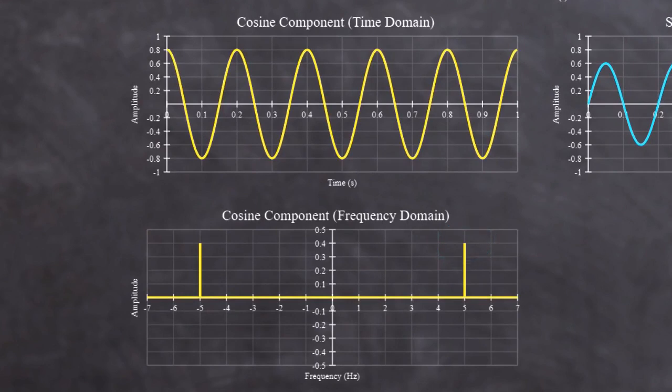But whereas the amplitude of the cosine wave in the time domain is 0.8, the amplitude in the frequency domain is only 0.4. And there's another similar peak, at minus 5 Hz.